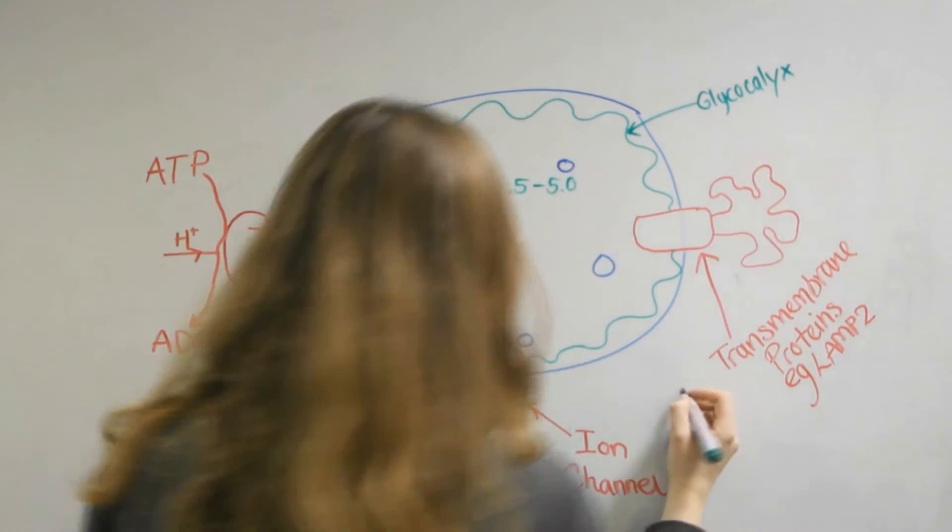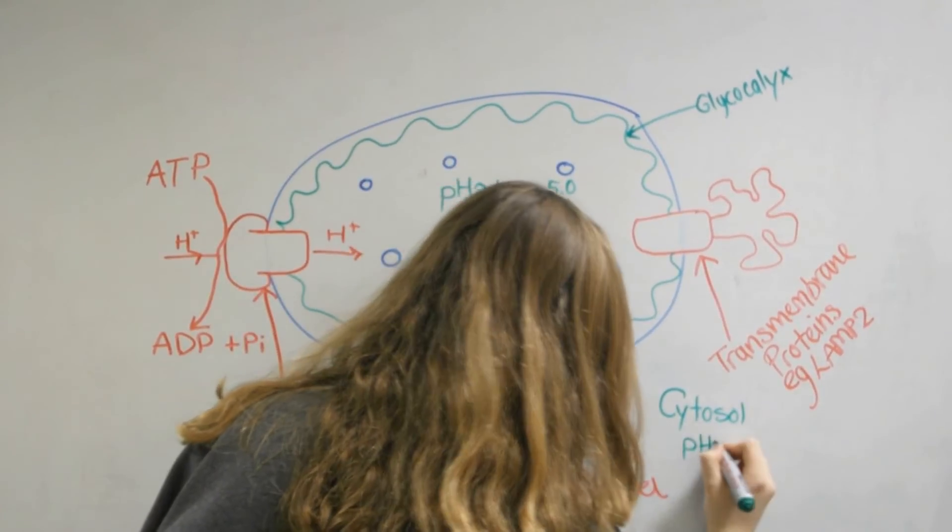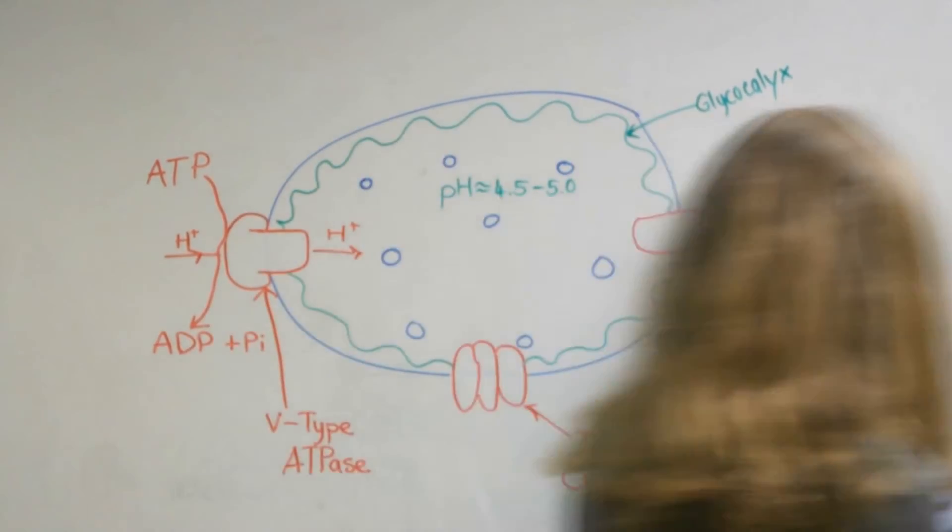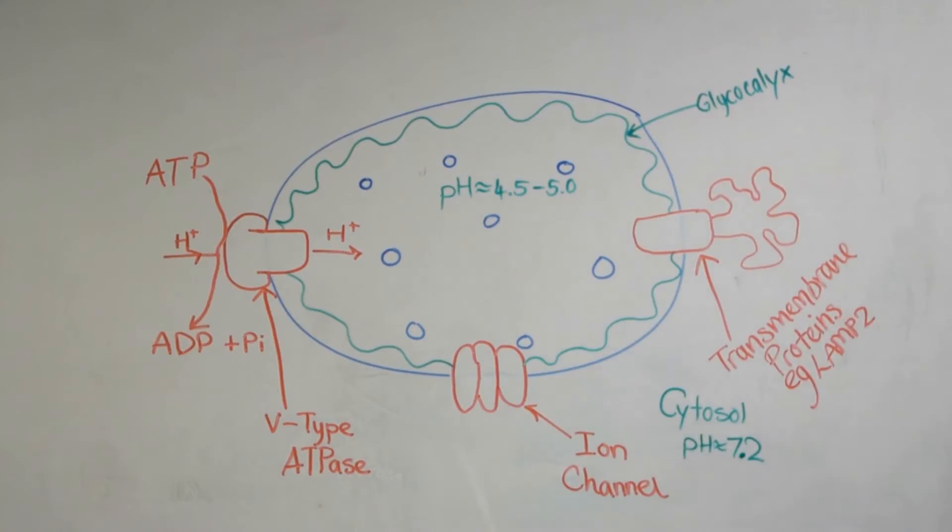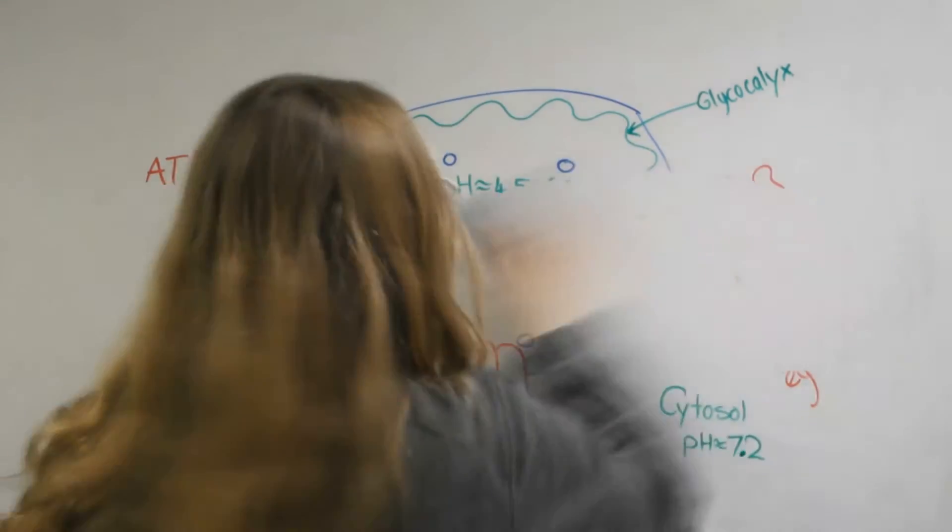The overall pH of the lumen of the lysosome is maintained at around 4.5 to 5.0, which means that should its contents manage to leak out into the surrounding cytosol it could do little harm to the other organelles as the cytosol maintains a pH of about 7.2, which is far higher than the optimum pH of the enzymes.